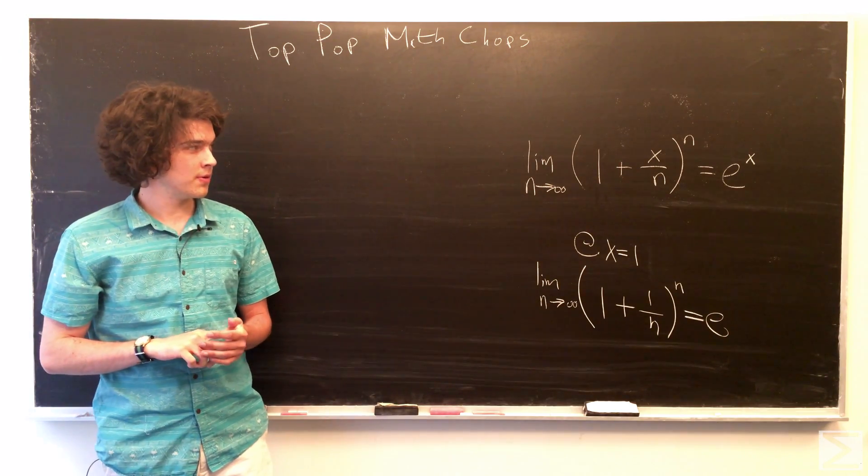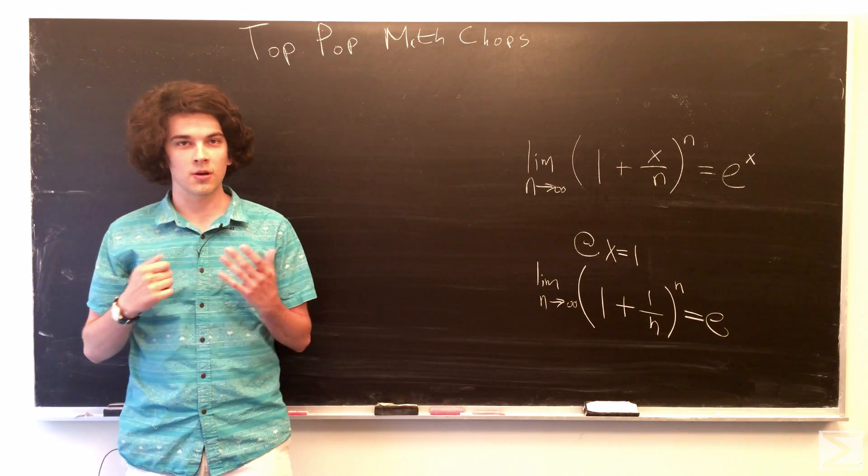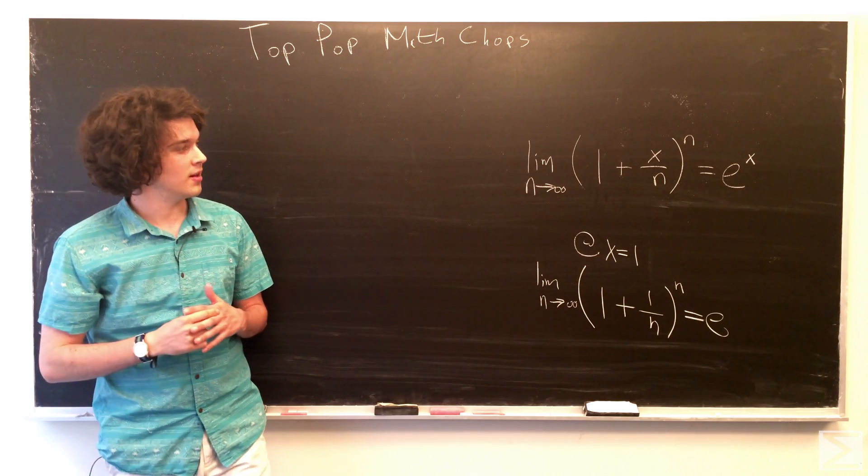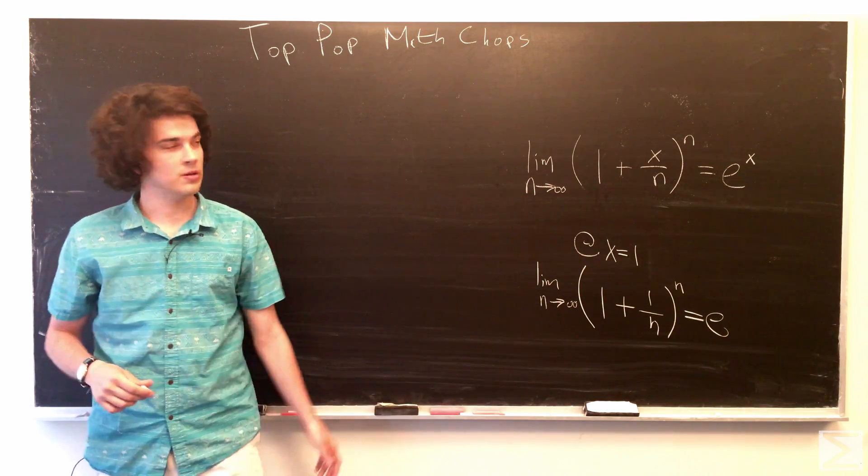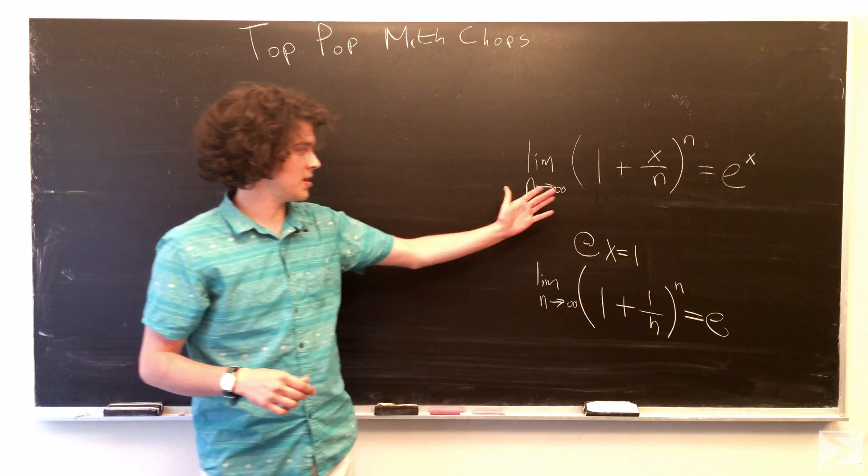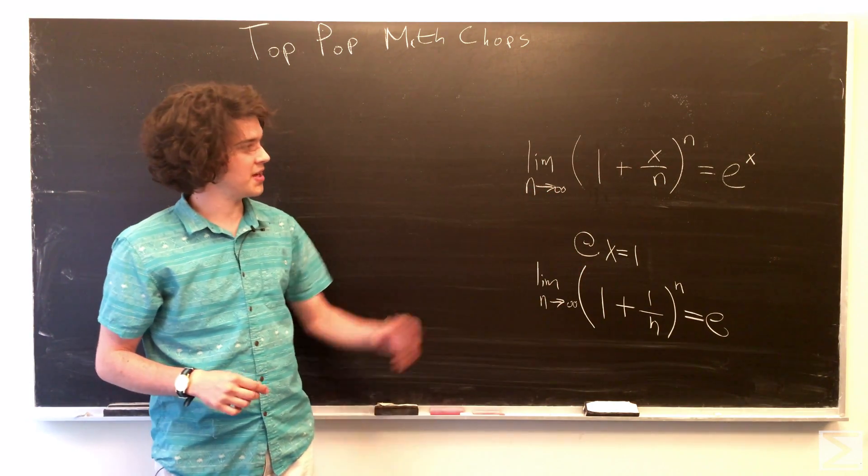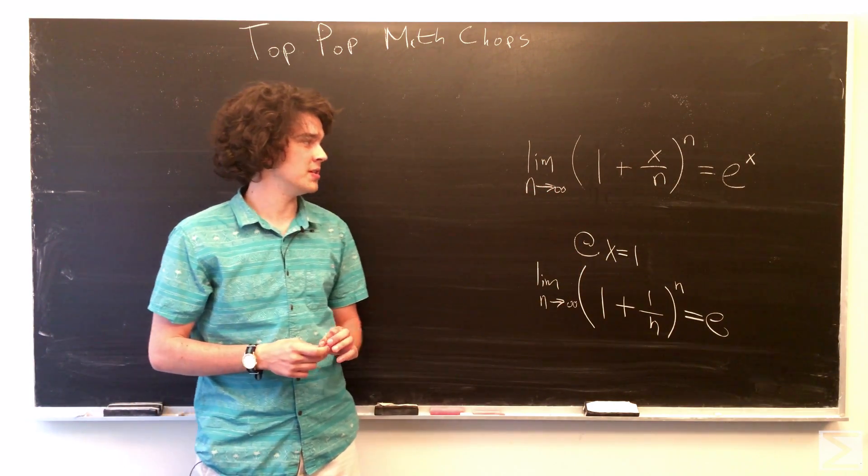Today we're going over a proof involving our favorite number e. This is the statement that we're going to prove: that the limit as n approaches infinity of 1 plus x over n to the n equals e to the x.